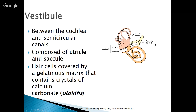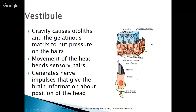There are hair cells covered by a gelatinous matrix that contains crystals of calcium carbonate — otoliths. These are tiny stones in your ear, within the utricle and saccule, and they're really important. Gravity pushes down on these otoliths, causing pressure on the gelatinous matrix on certain hairs. These hairs are lined up in a pattern so that when any movement of the head occurs, it bends those sensory hairs in a certain pattern, generating nerve impulses that give the brain information about the position of your head.